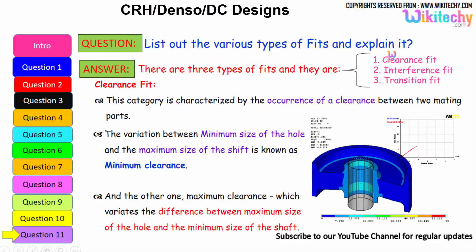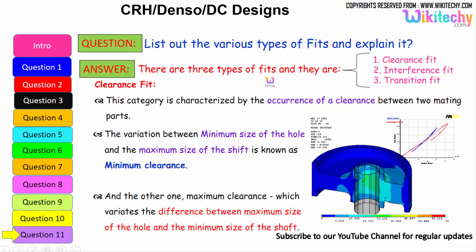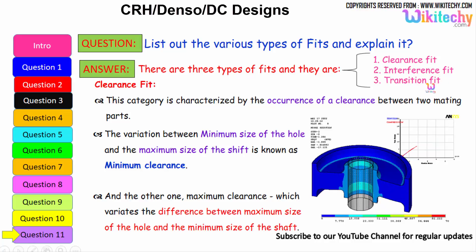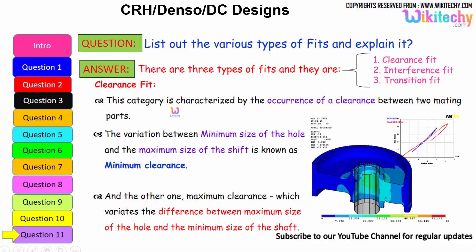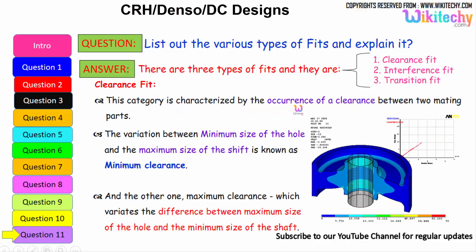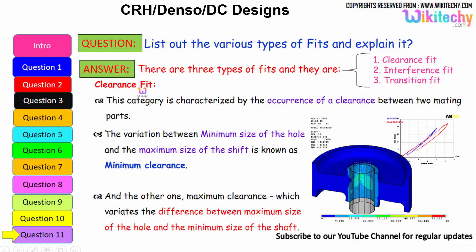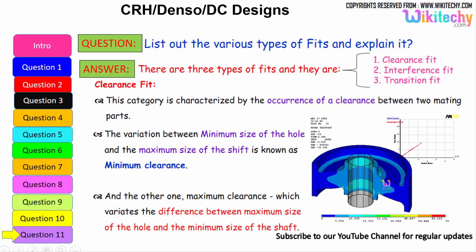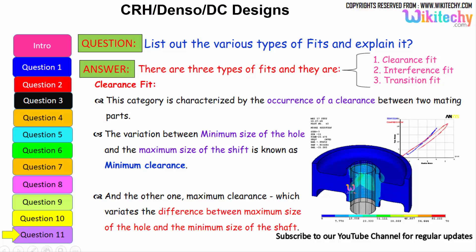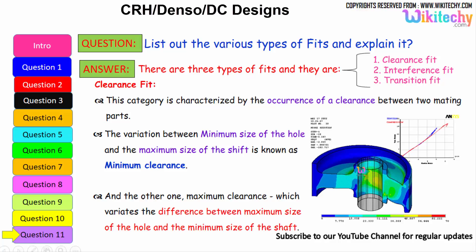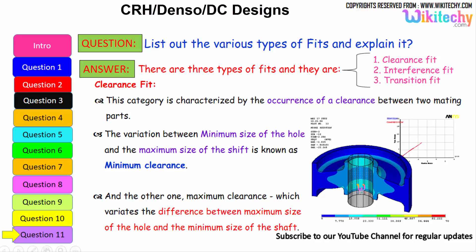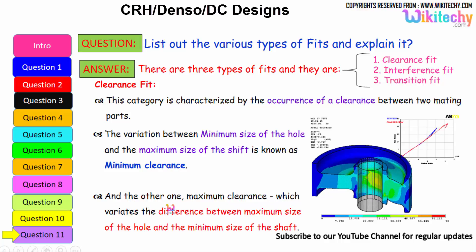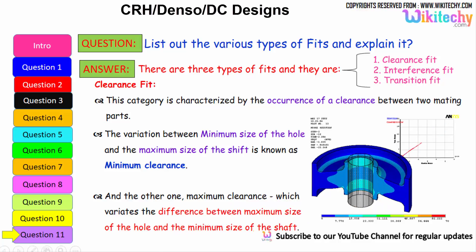The various types of fits: there are three types — clearance fit, interference fit, and transition fit. Clearance fit is characterized by the occurrence of clearance between two mating parts. The minimum clearance is the difference between the minimum size of the hole and the maximum size of the shaft; maximum clearance is the difference between the maximum size of the hole and the minimum size of the shaft.